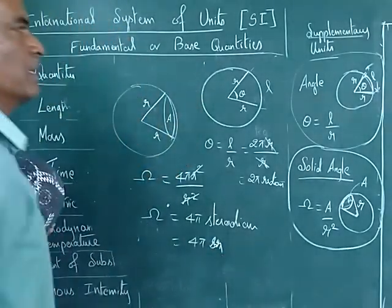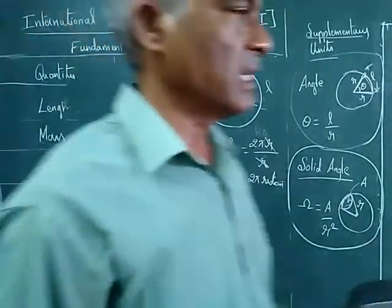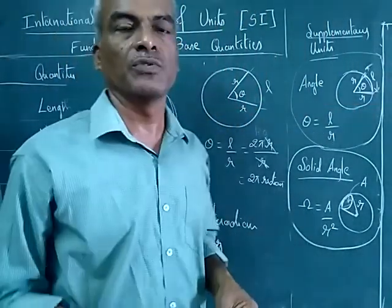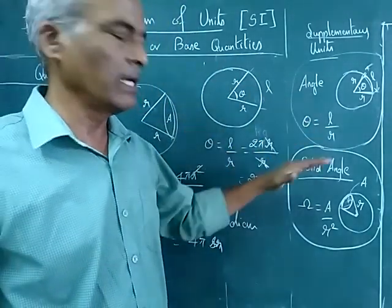Shortly written as 4 pi Sr, Sr for steradian. So these are the supplementary units that we have to remember, the difference between angle and solid angle.